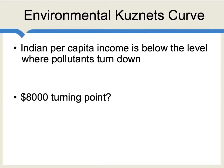The environmental Kuznets curve refers to the notion that at some level of wealth, societies start investing more in cleaner air and water. Typically, the turning point is considered to be at or slightly below $8,000 a year in terms of per capita income. At these levels of wealth, people start caring more about the environment. Part of the problem in India is that per capita income is still below this level, and not surprisingly, many aspects of the environment in India are still getting worse rather than better.